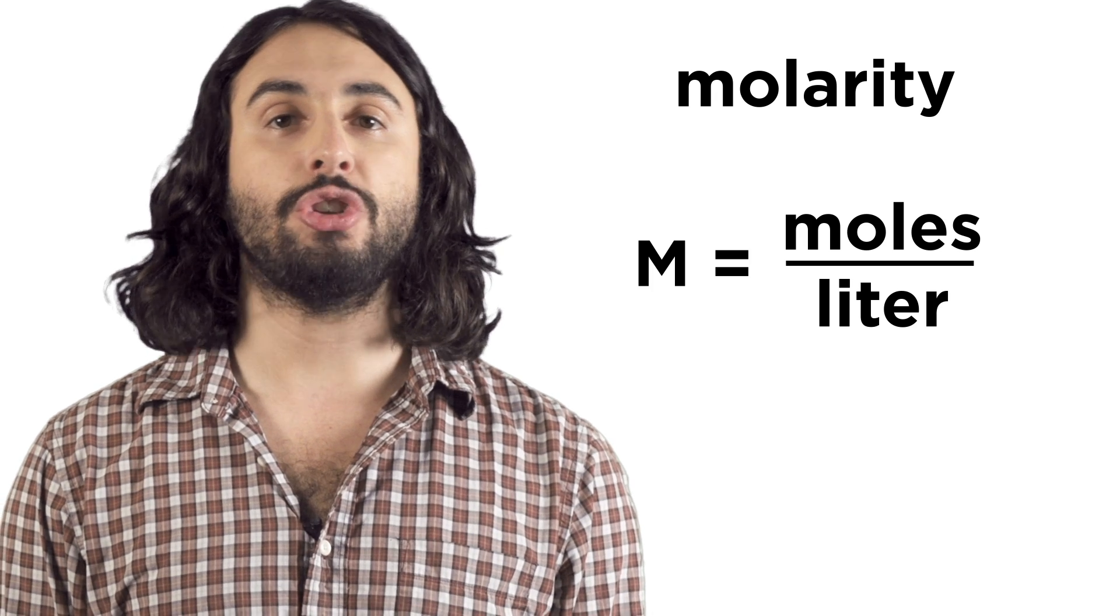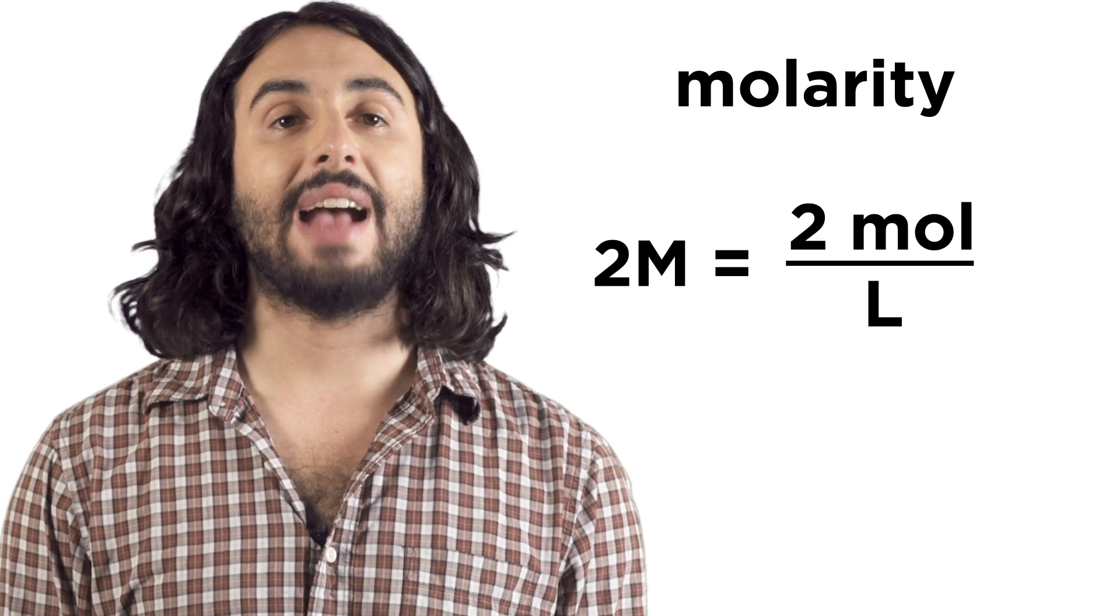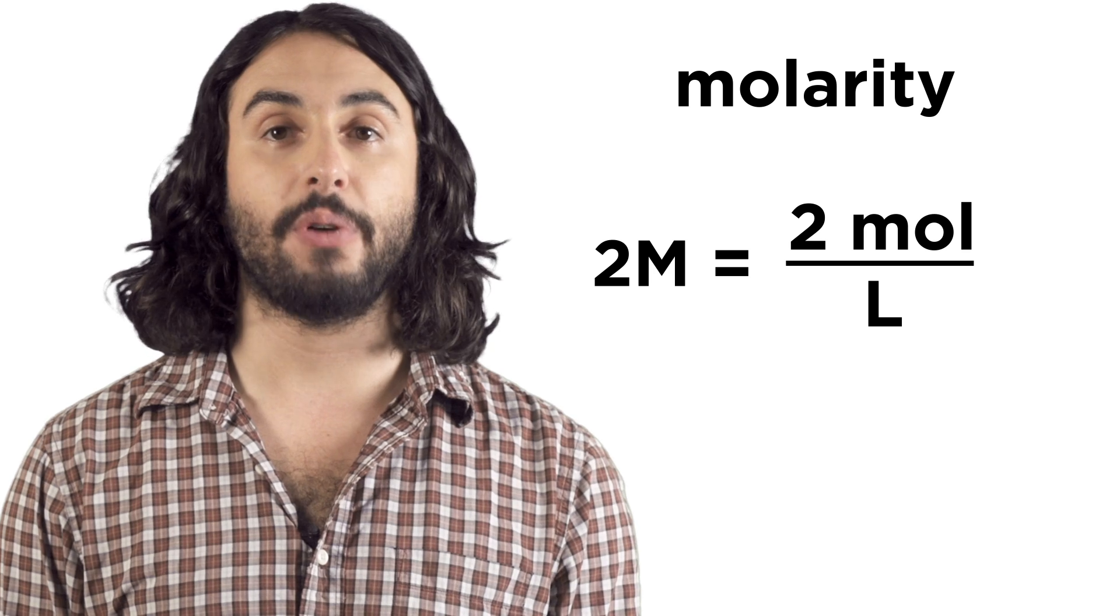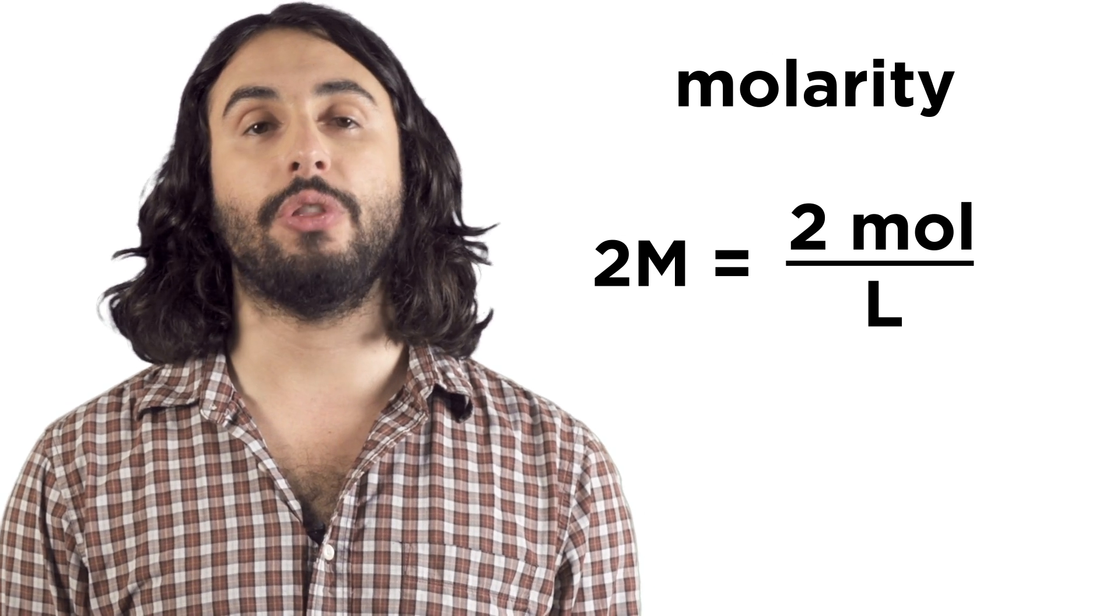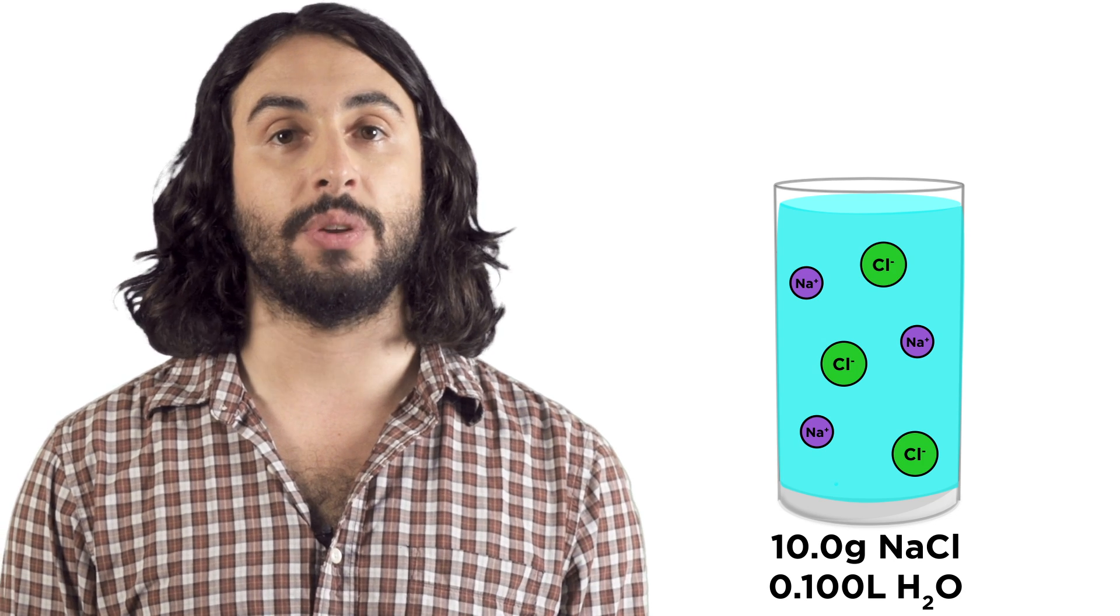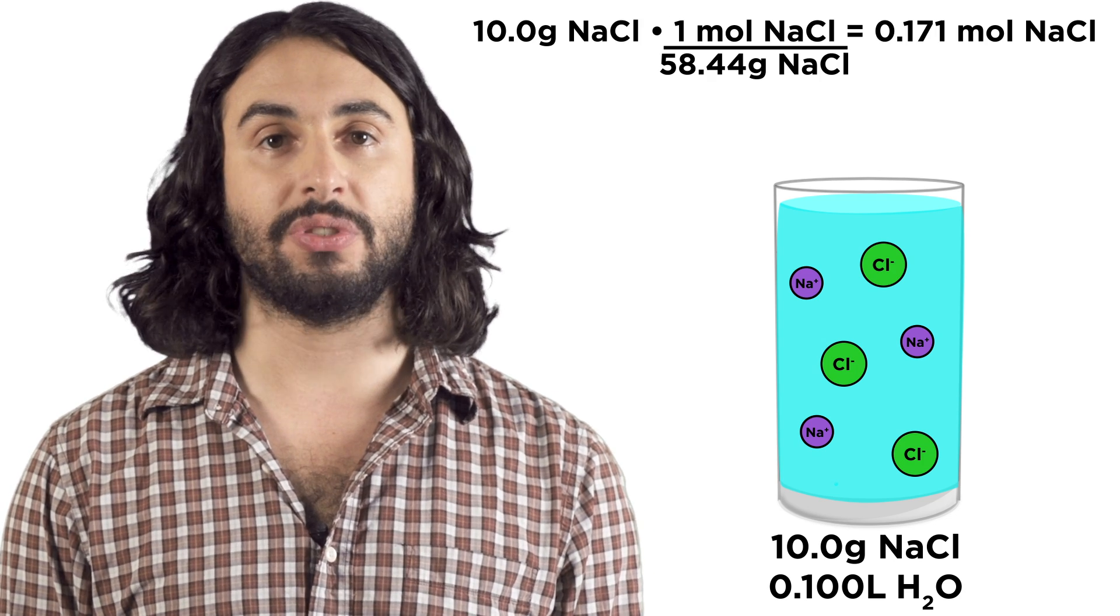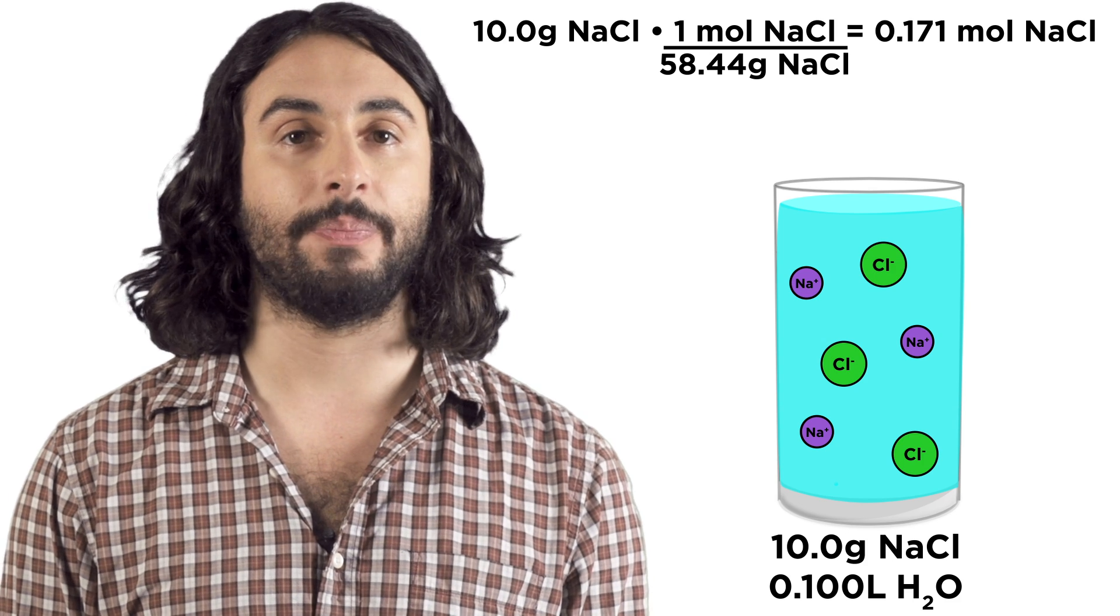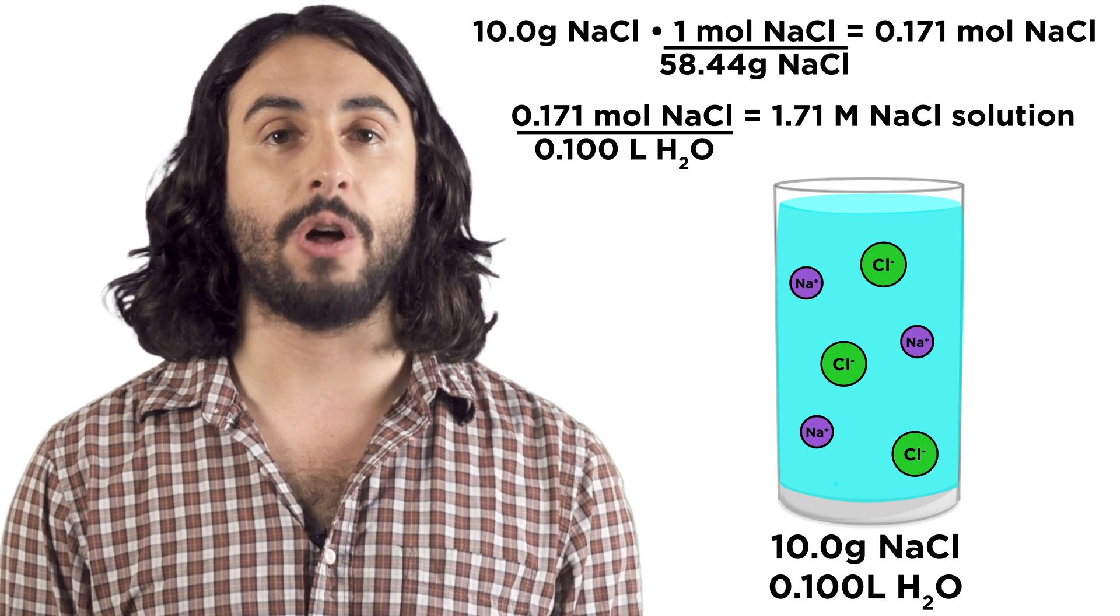So for example, a two molar solution has two moles of solute for every liter of solvent. If we want to know the molarity of a solution and we have the grams of solute, we just convert to moles using the molar mass of the substance and divide by the total volume of the solution.